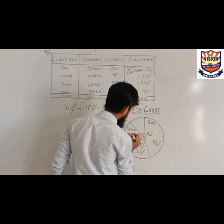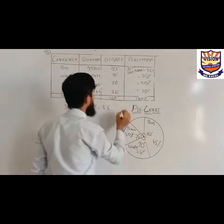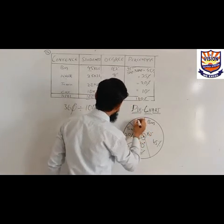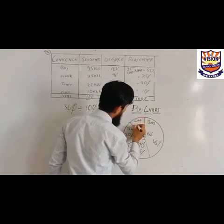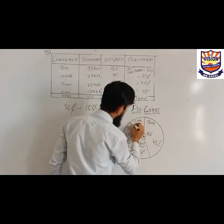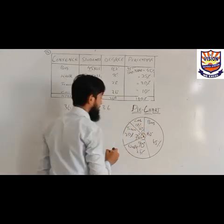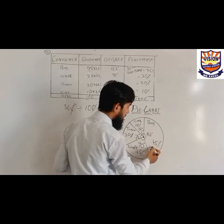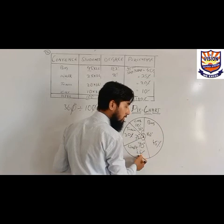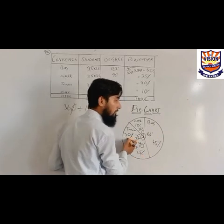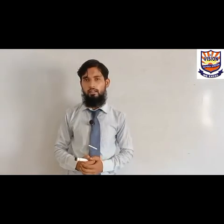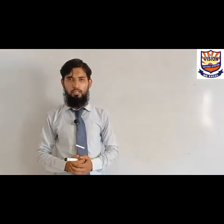Now mark 72 degrees for students who travel by train — 20 percent. And the last slice is understood to be 36 degrees — 10 percent of students travel by car. Instead of reading this big list, we can easily understand the information from this pie chart: 45 percent travel by bus, 25 percent walk to school, 20 percent travel by train, and 10 percent travel by car. I hope the concept of pie charts is now clear to you and this video will help you in understanding and constructing pie charts. Keep practicing at home. Thank you so much. Assalamu Alaikum.